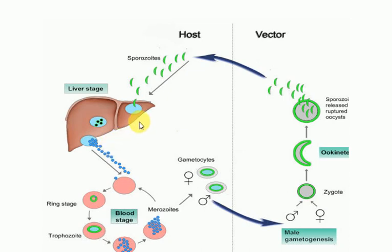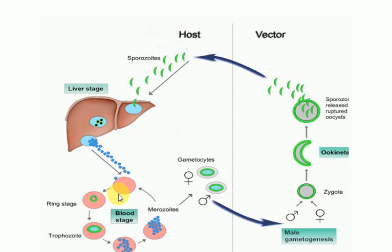In the case of falciparum and malariae, the schizonts rupture one to two weeks later and merozoites are released. They then attack the RBCs, forming a ring structure called a trophozoite. The trophozoite undergoes asexual nuclear division, creating schizonts that contain 6 to 24 merozoites. When they rupture, merozoites are released. Some merozoites again attack uninfected RBCs to continue the erythrocytic cycle, while some mature into male and female gametes.